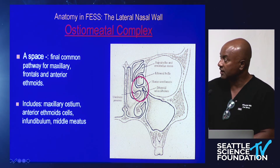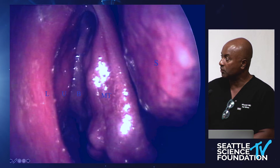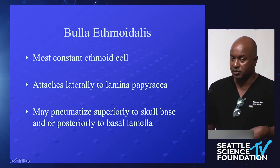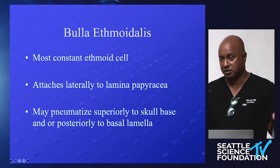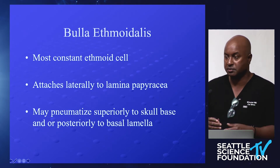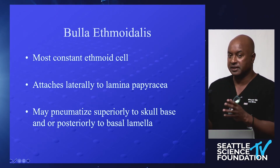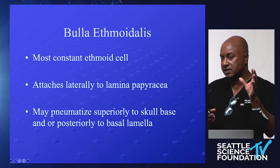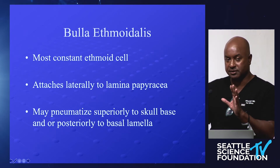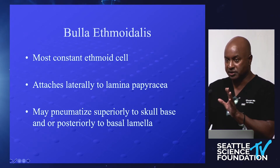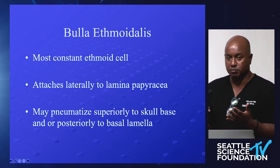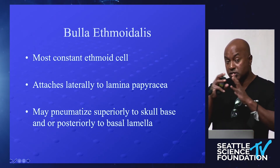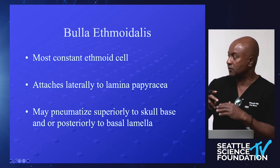Once you've found the ethmoid bulla, you can head upward — you may have a retrobulla recess or a superorbital ethmoid cell to dissect out one by one. Think of the ethmoid bulla combined with the middle turbinate basal lamella as giving you everything you need for orientation. I often leave the ethmoid bulla in place during my frontal and maxillary sinus dissection because it acts as an eye protector — like gauze against the eye — maintaining orientation and keeping me low and in the anterior frontal recess. Once I take down the ethmoid bulla, I want a complete resection to create a large lateral and vertical space.